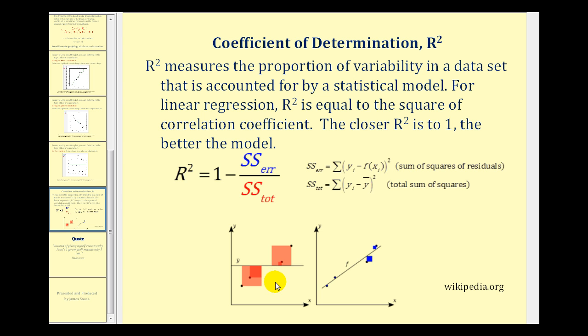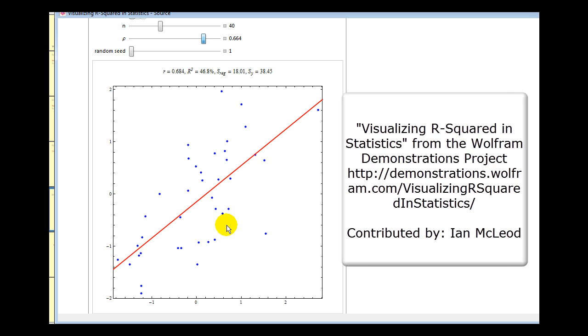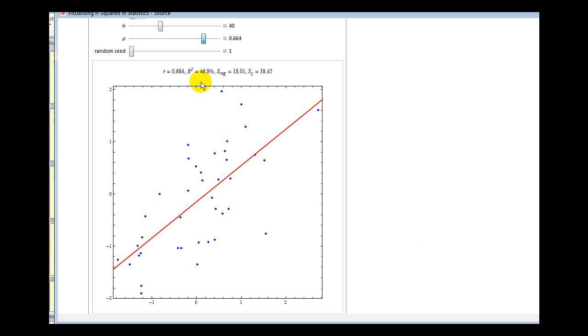Again, to get a better feel for these two measures, let's take a look at an animation. Here we have a blue scatter plot, and our red regression line, or line of best fit. Right now, r is equal to .68, and r squared is approximately 47 percent. So it has a positive correlation, and roughly 47 percent of the variability of the data set can be explained by the linear relationship, or by the equation of the line.